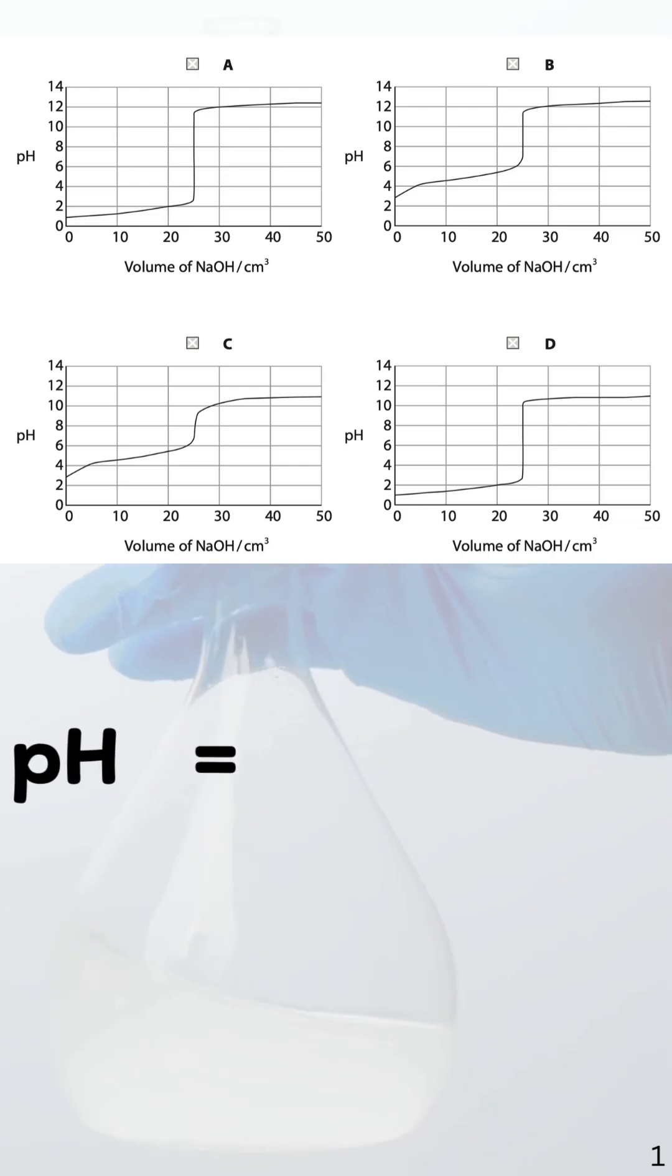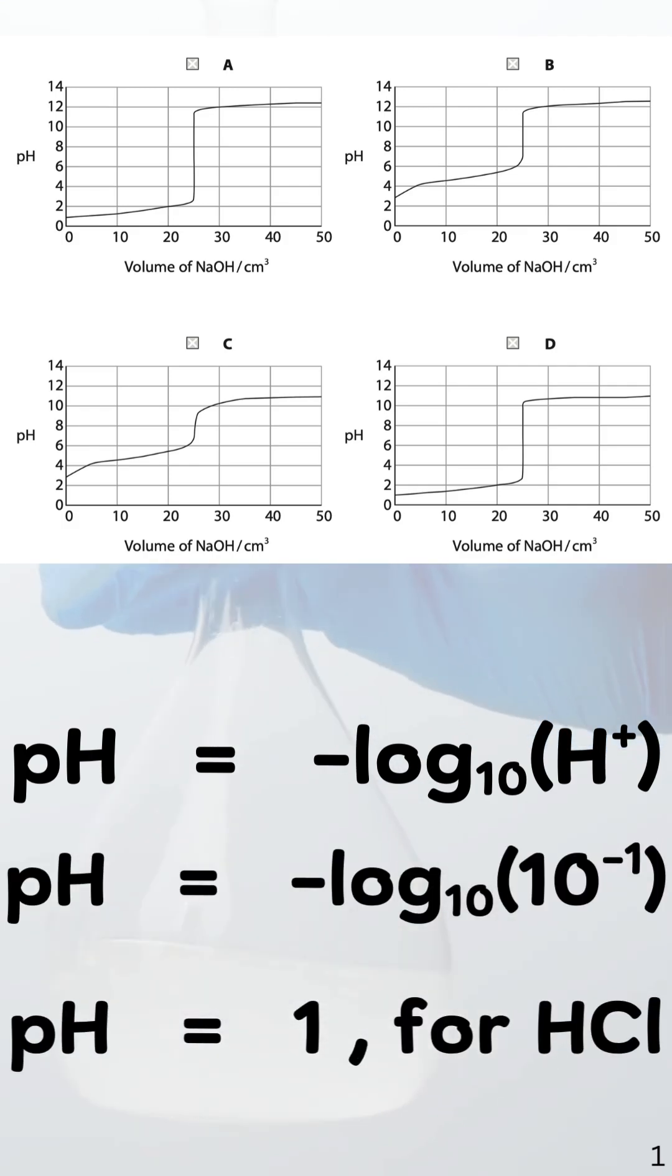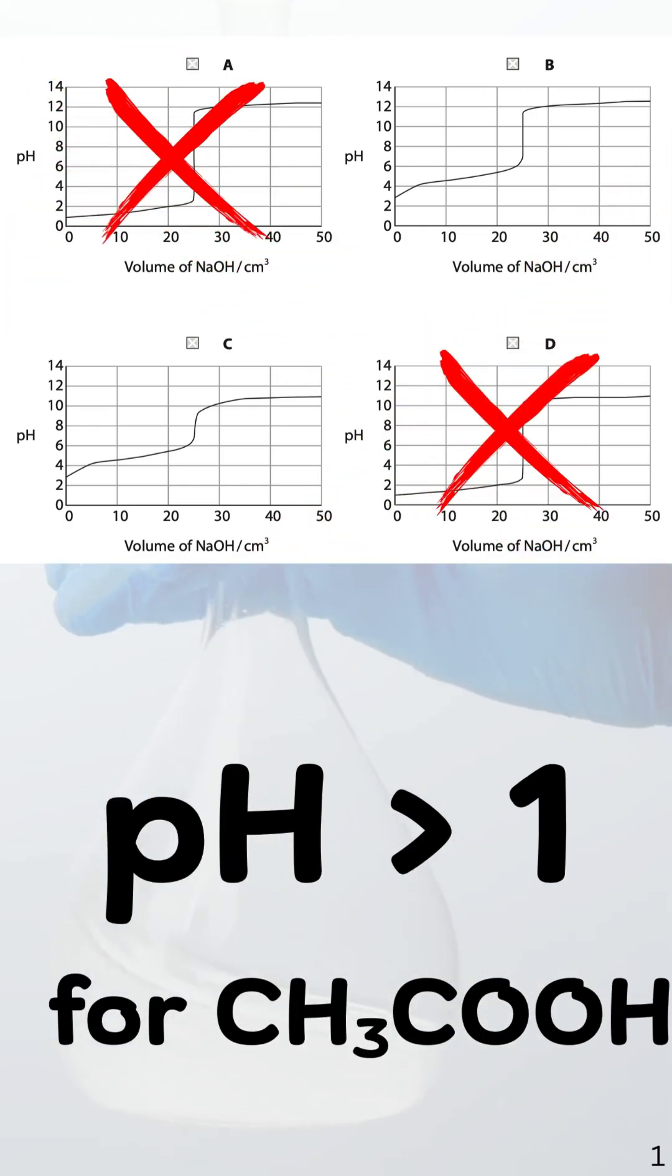Now, imagine if this was a strong acid like hydrochloric acid at 0.1 moles per cubic decimeter. The pH would be about 1. But here we've got a weak acid. The pH cannot be 1. It has to be a little higher than 1, but still below 7. That immediately eliminates graphs A and D.